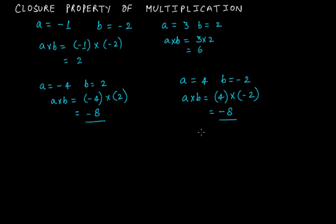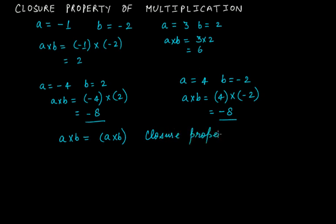So it means that if you multiply two integers, it doesn't matter whether they are positive or negative — the outcome will always be an integer. Therefore, in general, we can say that a × b follows the closure property. Integers are always closed under multiplication.